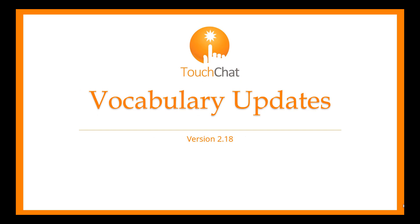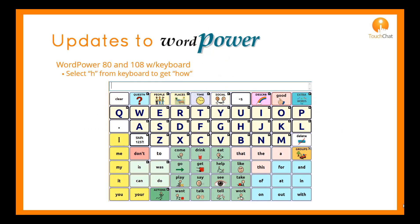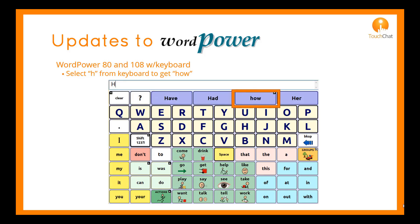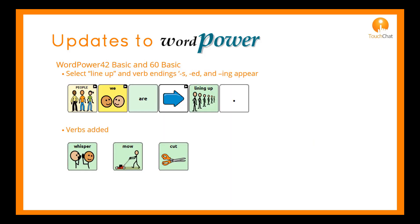Let's take a look at some vocabulary updates in version 2.18. WordPower 80 and 108 with keyboard have an added bonus when you tap the H key — the question word 'how' appears in the word prediction box, completing easy access to all question words by the tap of a letter. Updates to WordPower 42 Basic and 60 Basic provide verb endings when someone selects a verb, including endings for s, ed, and ing.